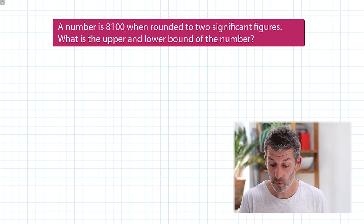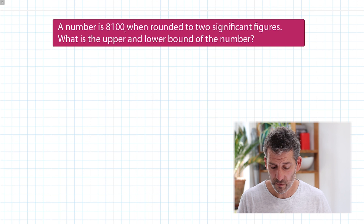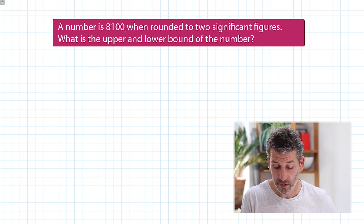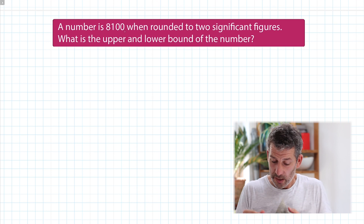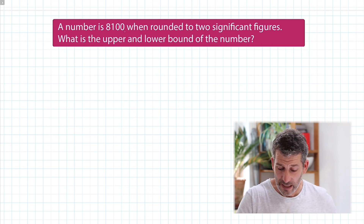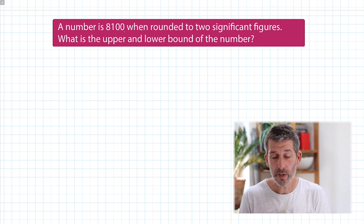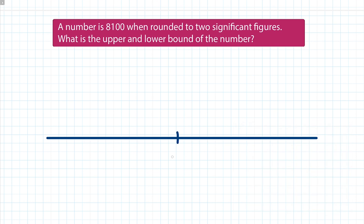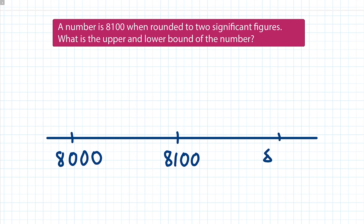A number is 8,100 when rounded to two significant figures. What is the upper and lower bound? The first significant figure is the 8, which represents 8,000, and the second significant figure is the 1, which represents 100. I'm going to draw a number line — that second significant figure is in the hundreds column, so my number line is going to go up in hundreds with 8,100 in the middle. We're looking for the boundaries within which that number must fall so that when rounded it gives 8,100.